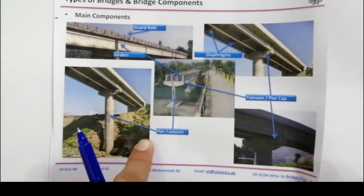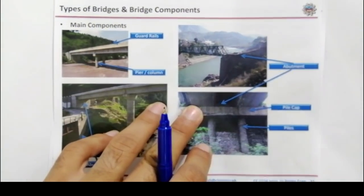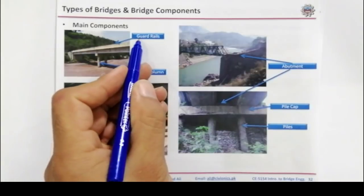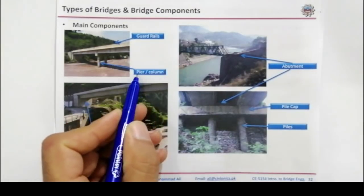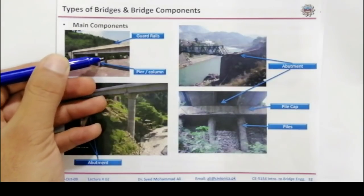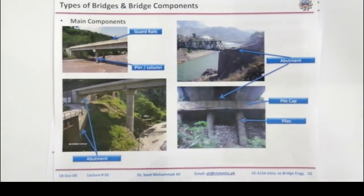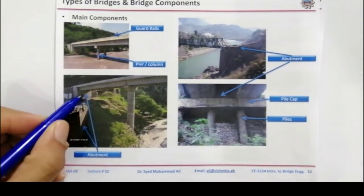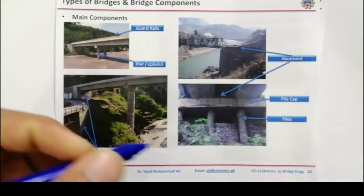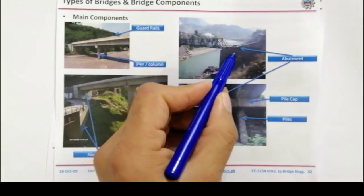Here are some more pictures for the main components of an RCC bridge. You can see the guard rails, which I have already discussed, and the pier columns. Now, what is an abutment? You can see here clearly — this is an abutment. The end supports of the bridge are called abutments. This is called an abutment, and this is also an abutment.